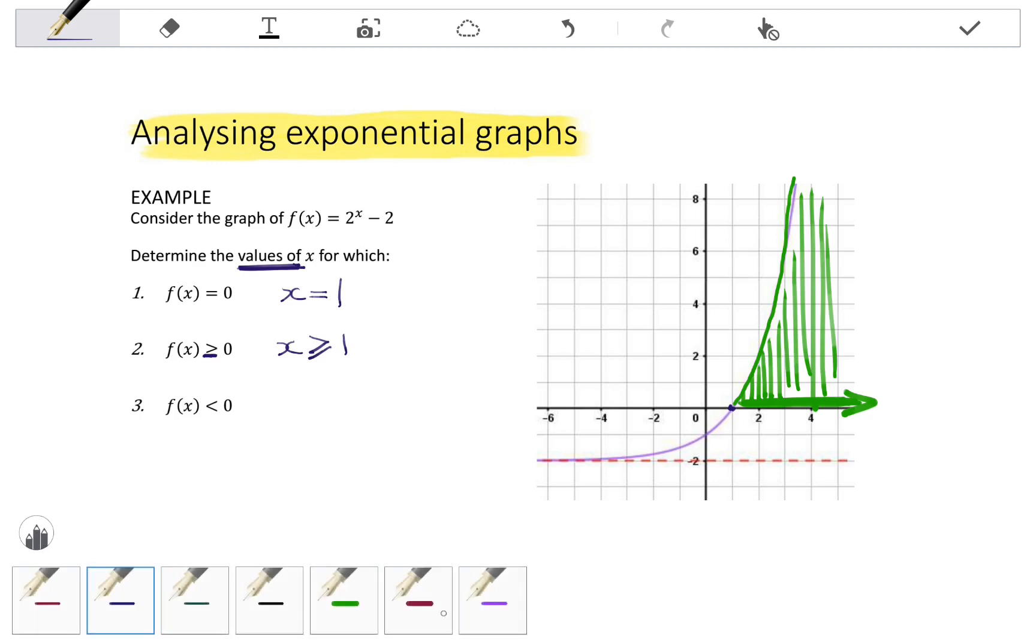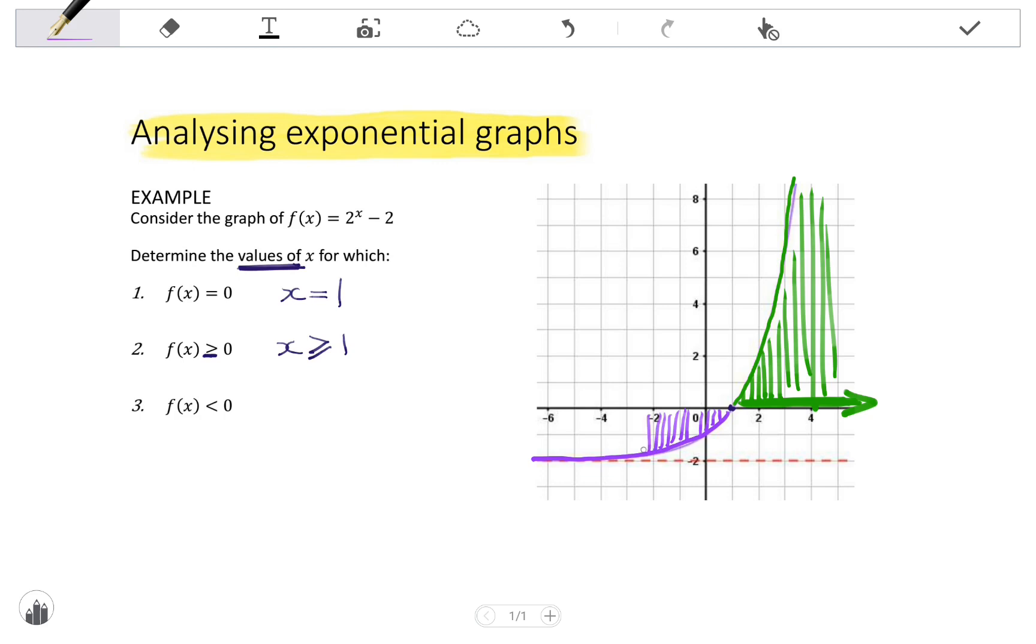The third question asks for the values of x where f(x) is less than 0, which means where the y values are less than 0, which is where the y values are negative, which means the part of the graph that's below the x-axis. So we use the y values to determine the part of the graph, but we need to answer in terms of the x values for this part.